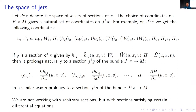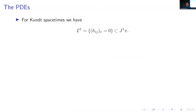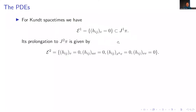We are not working with arbitrary sections — we have differential equations that these must satisfy. In particular, for Kundt spacetimes we have h_{ij,v} = 0, considered as a subset in J^1 π. If you have a smooth solution to this equation, it is also a smooth solution to derivatives of this equation. So if we differentiate all of this, we get new equations in J^2 π, and so on, giving a sub-manifold E_k in J^k π for every k.